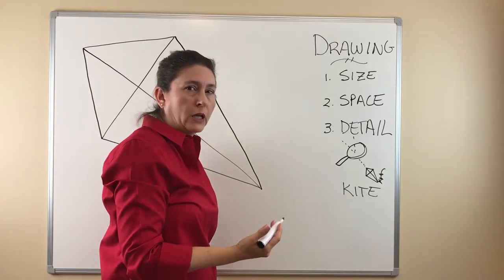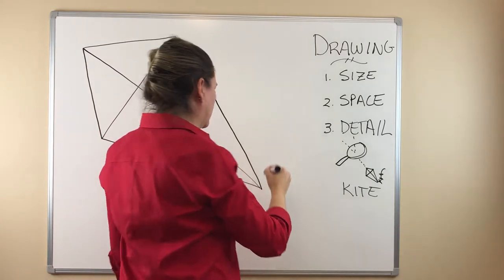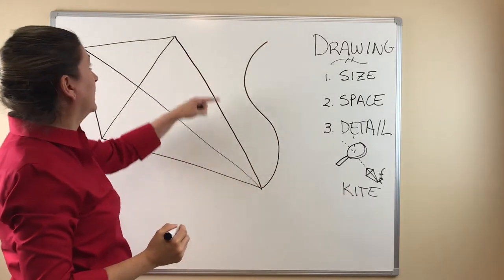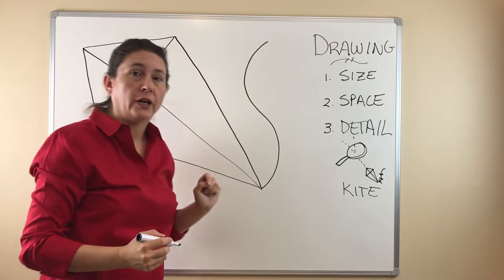And the tail is essentially a kind of a curvy S and you make it almost as high and as long as your kite.